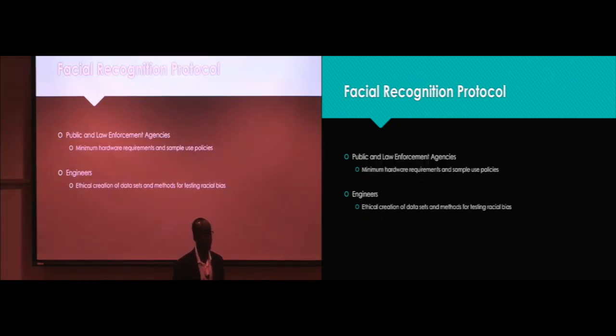Three, for public and law enforcement agencies, a sample public use policy. They can do things about minimum hardware requirements. Anybody that knows a little about photography knows that things like f-stop lenses might change the dimensions of your face. So standardization for even something as simple as the type of cameras used by these agencies would be very helpful. Minimum pixel requirements for the input photos would also be helpful in creating standardization. And then finally for the engineers, the ethical creation of data sets is a very interesting issue as to where these photos come from.